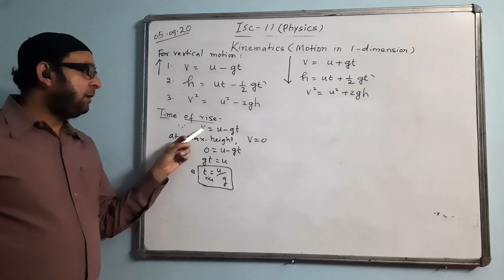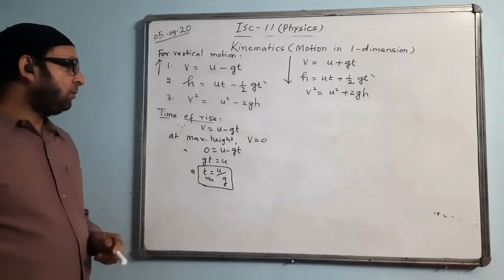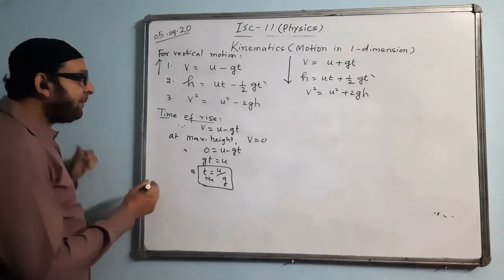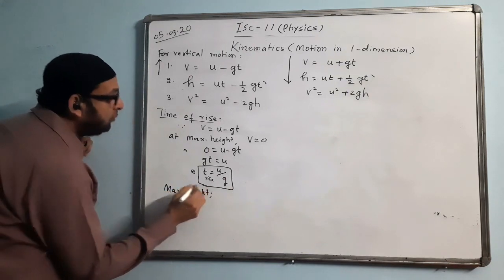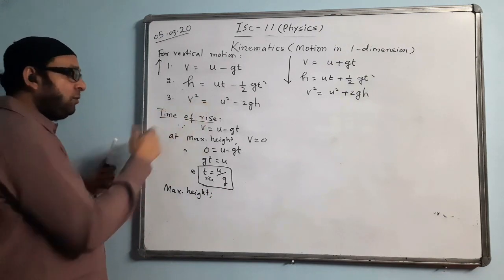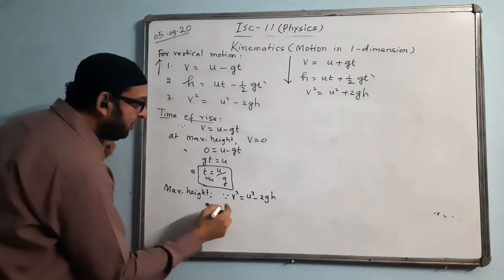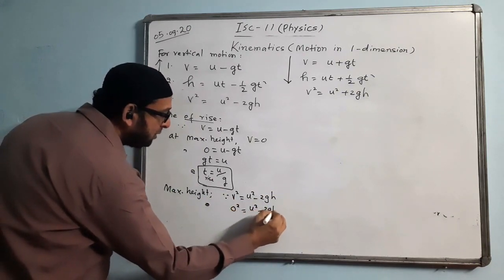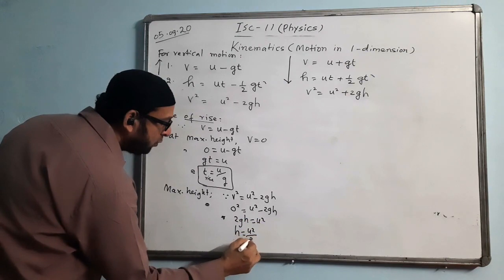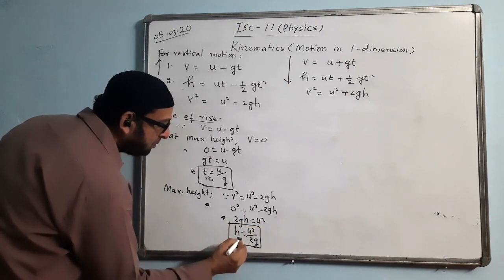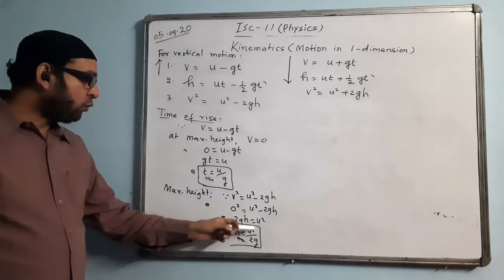For maximum height, we use v² = u² − 2gh. At maximum height, v = 0. Substituting: 0 = u² − 2gh, so 2gh = u², therefore h_max = u²/2g. This is the formula for maximum height reached by the body. In problems we can directly use t_rise = u/g and h_max = u²/2g by putting v = 0 in the respective equations.